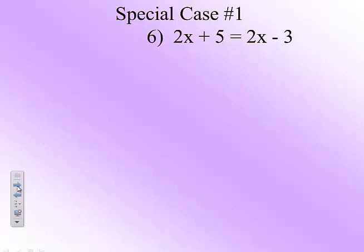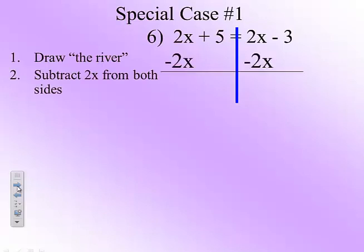The next thing that we are going to do is subtract 2x from both sides. Subtract 2x from both sides. And when we do that, we end up with 5 equals negative 3.